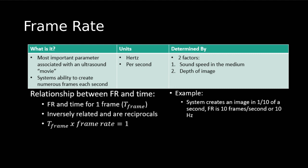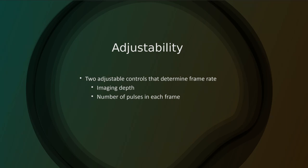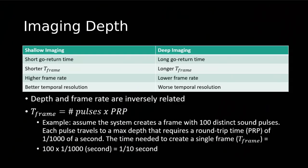For a mathematical example: our system creates one frame in one-tenth of a second, so in one second we can produce 10 whole frames. Adjustability: we know frame rate is determined by imaging depth, but also by the speed of sound in our medium and the number of pulses per frame. This references back to imaging depth and what we can do as technologists to improve our frame rate, or unfortunately make it worse.